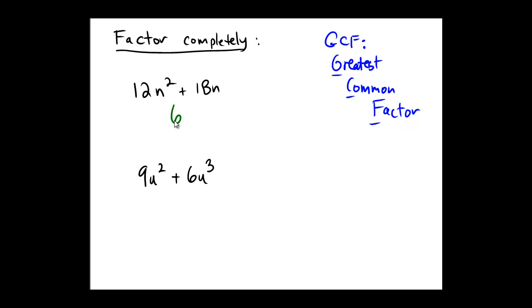For the variable part, we have 2 copies of n over here, and only 1 copy of n over here. So since we have to be common, we can only take out at most 1 copy of n, and so that's the common factor.